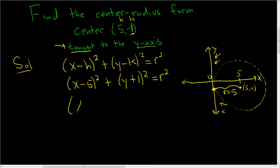(x-5)² + (y+1)² = 5², which is 25. And that's it.